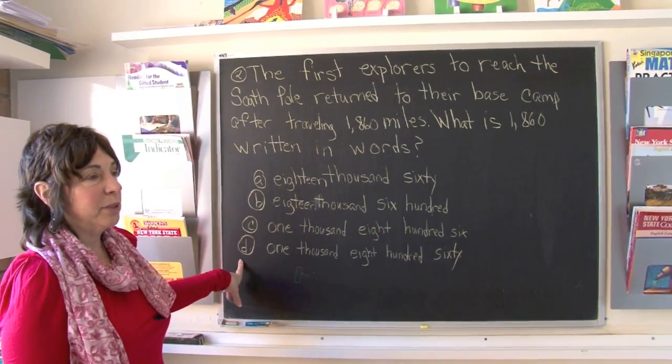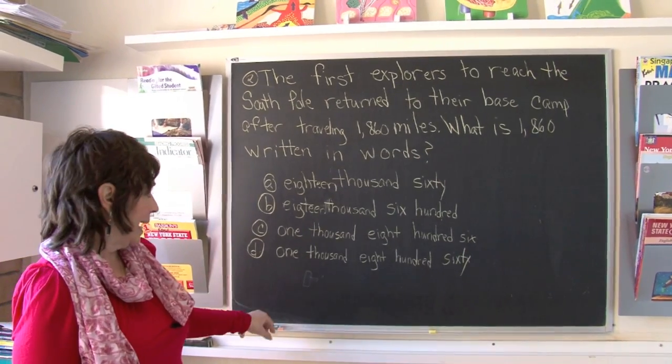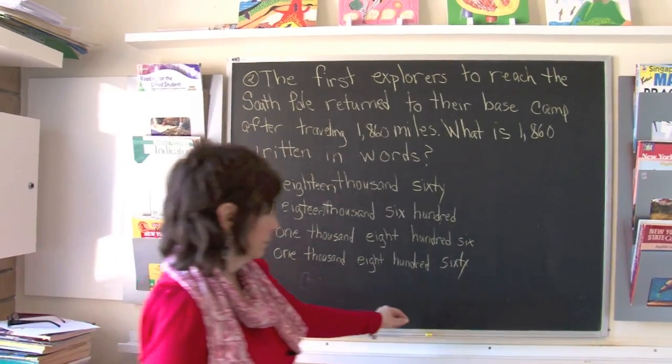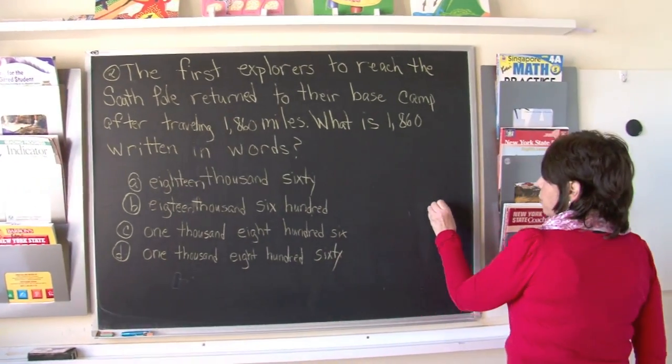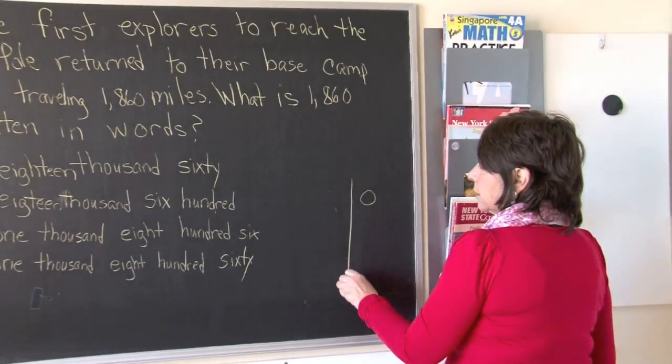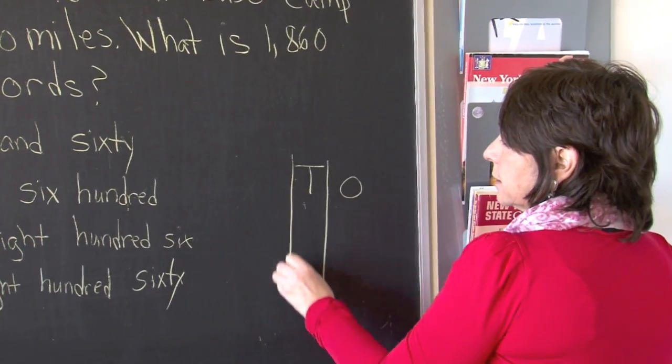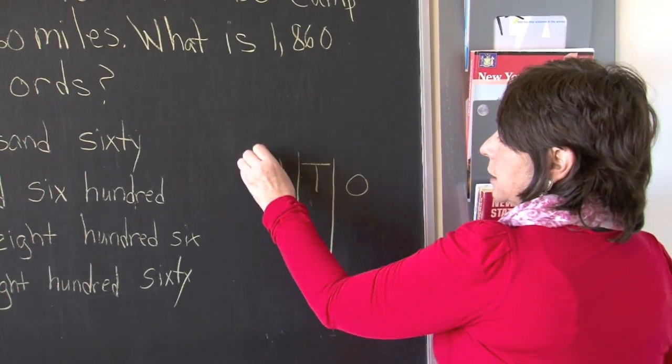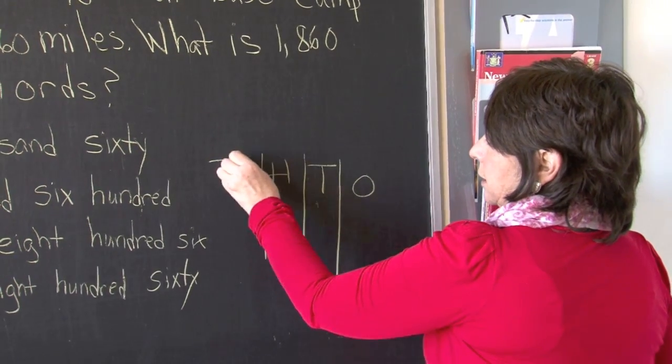Boys and girls, this is really a question about place value, so let's make our columns right now. As you know, we begin with our ones, tens, hundreds, thousands.